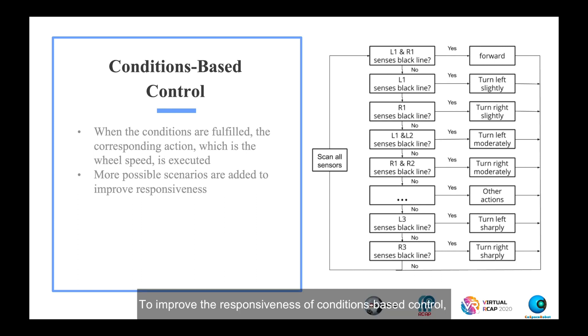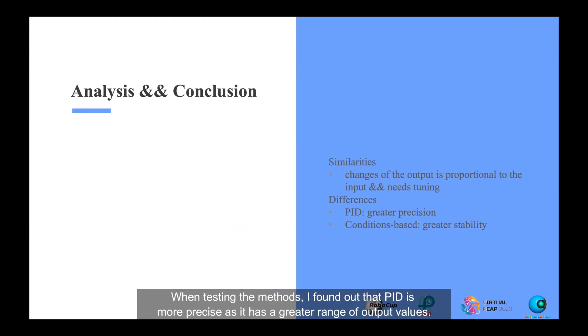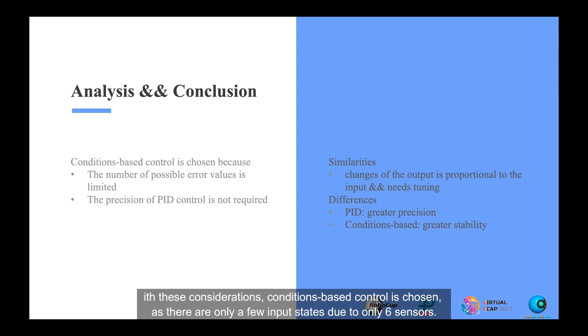To improve the responsiveness of conditions-based control, the number of scenarios considered should cover as many possibilities as possible. When testing the methods, I found that PID is more precise as it has a greater range of output values. Meanwhile, conditions-based control is more stable when running as it has less variety of speed changes. With these considerations, conditions-based control is chosen as there are only a few input states due to only six sensors.